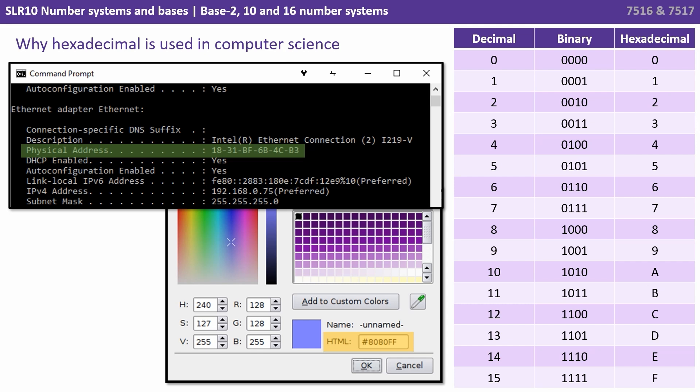We can see here the physical address of a computer is being represented as a series of six two-digit hexadecimal numbers. In the other screenshot below, we can see that a colour is being represented with hexadecimal characters. We can see from the table on the right that a single hexadecimal character represents a sequence of four binary characters.